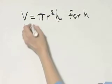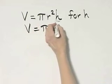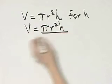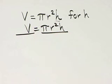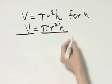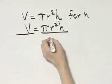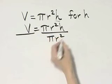How do we isolate h then, or get it by itself? Well, I will simply divide both sides of this equation by the coefficient of h, everything besides h, which is pi r squared.